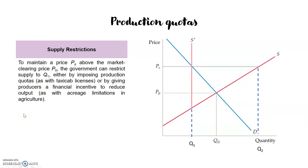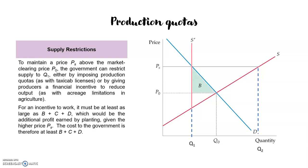Besides entering the market and buying up output to increase total demand, the government can also cause the price of a good to rise by reducing the supply. The government can do this by decree — simply setting quotas on how much each firm can produce. By setting the appropriate quotas, the price can be forced up to any arbitrary level. If the government sets the maximum quantity that can be exchanged to q1, then supply becomes S prime, and the new price will be PS.